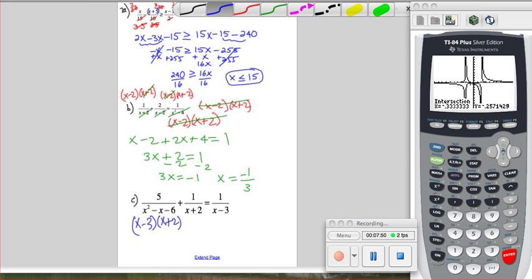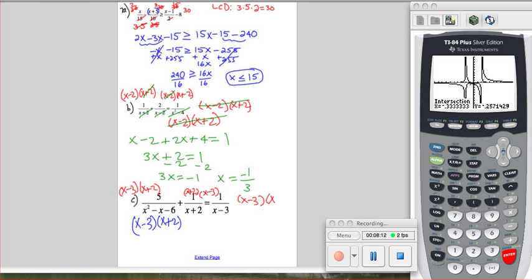So we're going to multiply both sides by our LCD, which is x minus 3 times x plus 2. So x minus 3 times x plus 2, x minus 3 times x plus 2, and x minus 3 times x plus 2. So here the whole thing cancels. Here the x plus 2's cancel, and here the x minus 3's cancel.